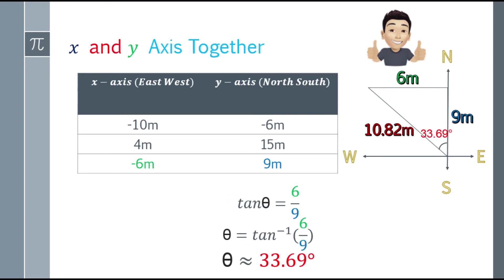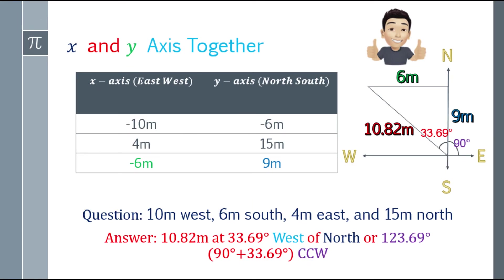Next, the angle. To find the angle, check where the angle points. Tangent theta equals opposite over adjacent, so 6 over 9. Taking the arc tangent gives us 33.69 degrees. So the final answer for 10 meters west, 6 meters south, 4 meters east, and 15 meters north will be 10.82 meters at 33.69 degrees west of north.